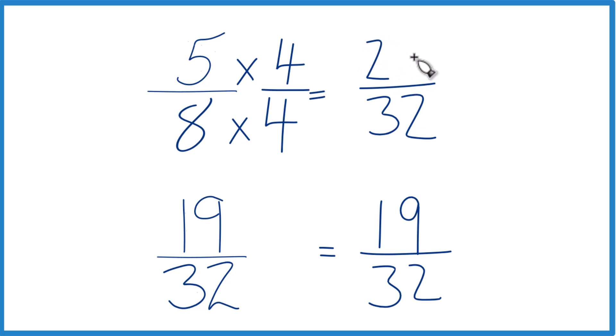5 times 4, that's 20. And now, same denominator, compare the numerators.